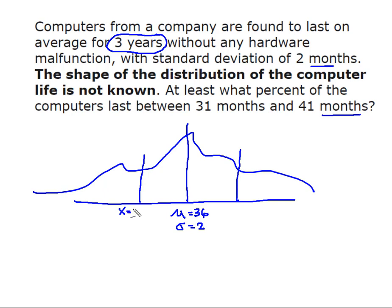So down here I have an X of 31. Up here I have an X of 41. I'm looking for the percentage of data that falls in here. So I know that I need a value for K. K is the number of standard deviations. So my question is, how many standard deviations did it take me to move from 36 to 41 months if